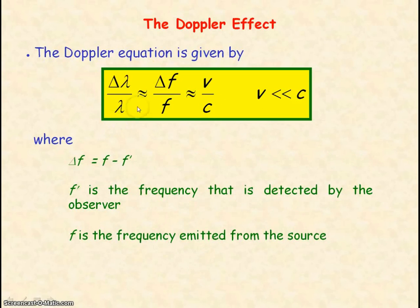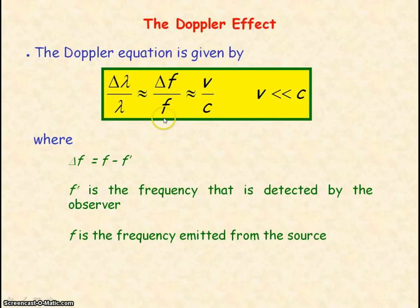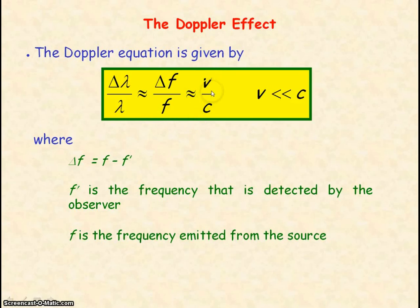Also, the fractional change in wavelength is approximately equal to the fractional change in frequency. So delta f divided by f is approximately equal to V divided by C.